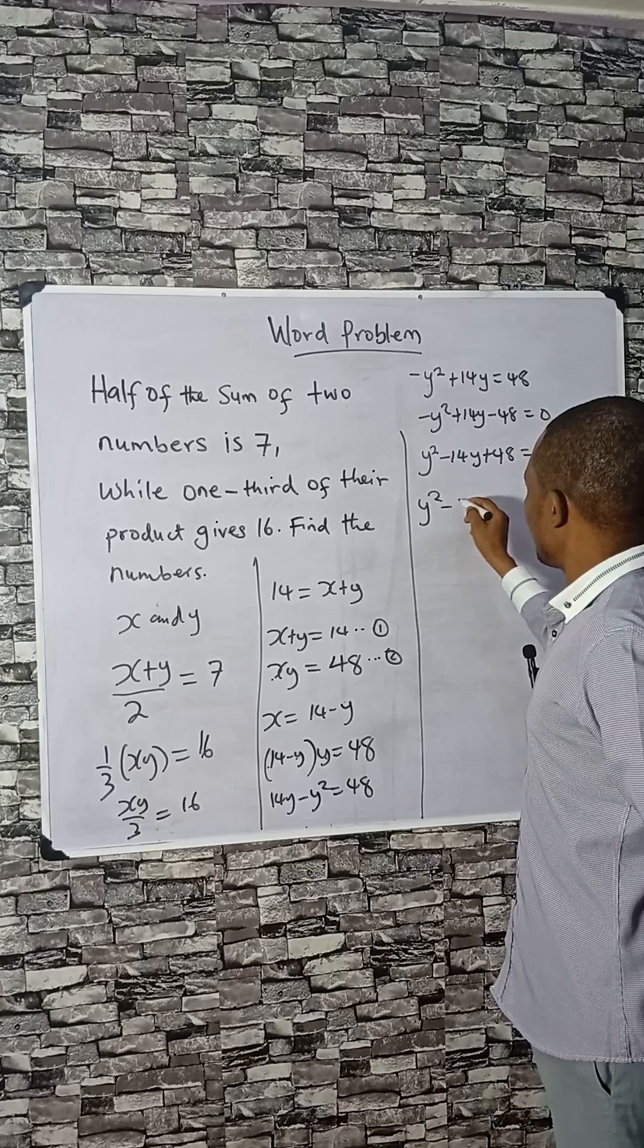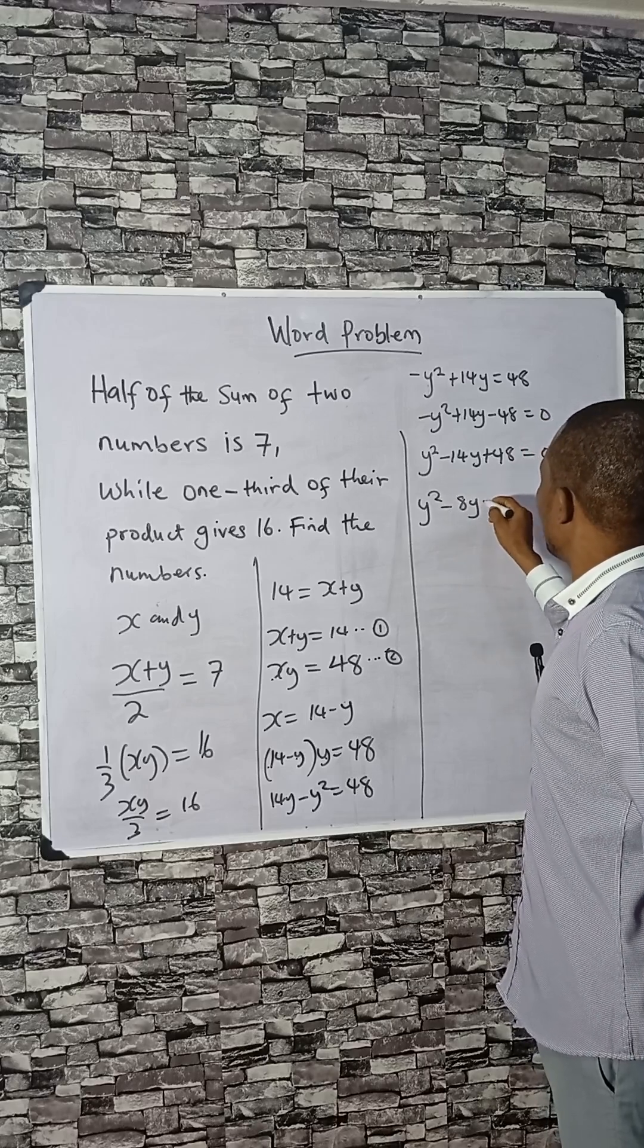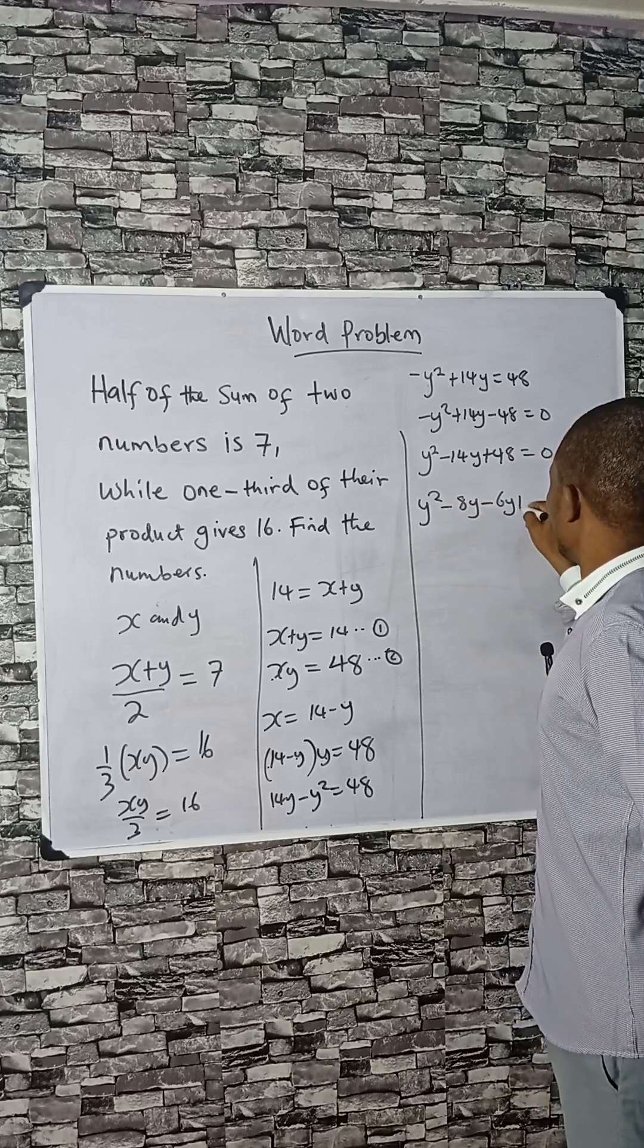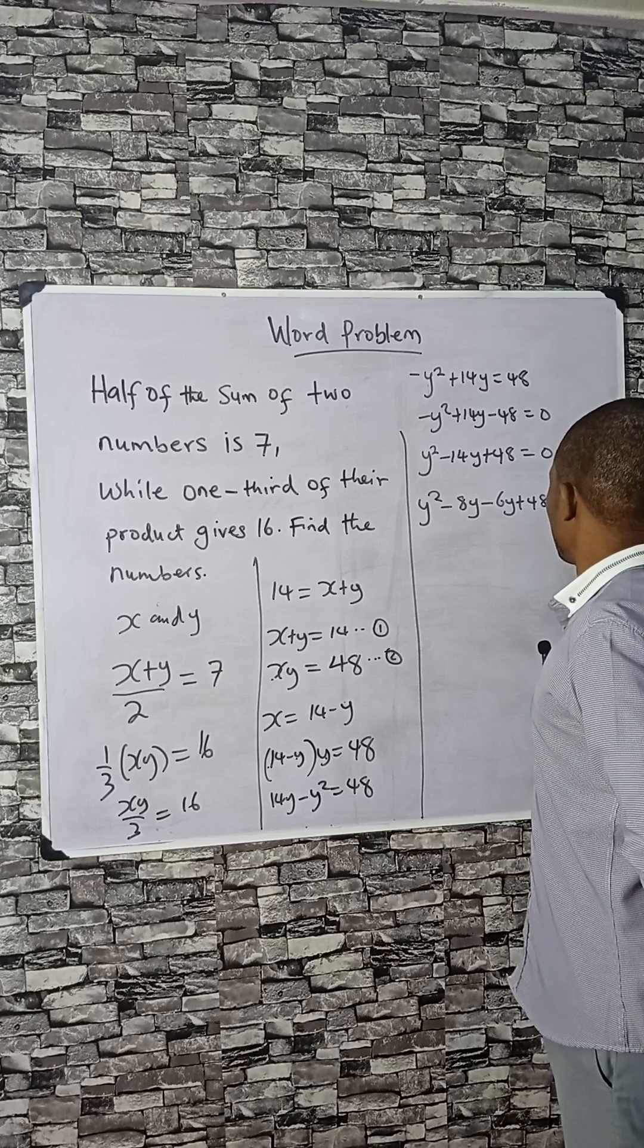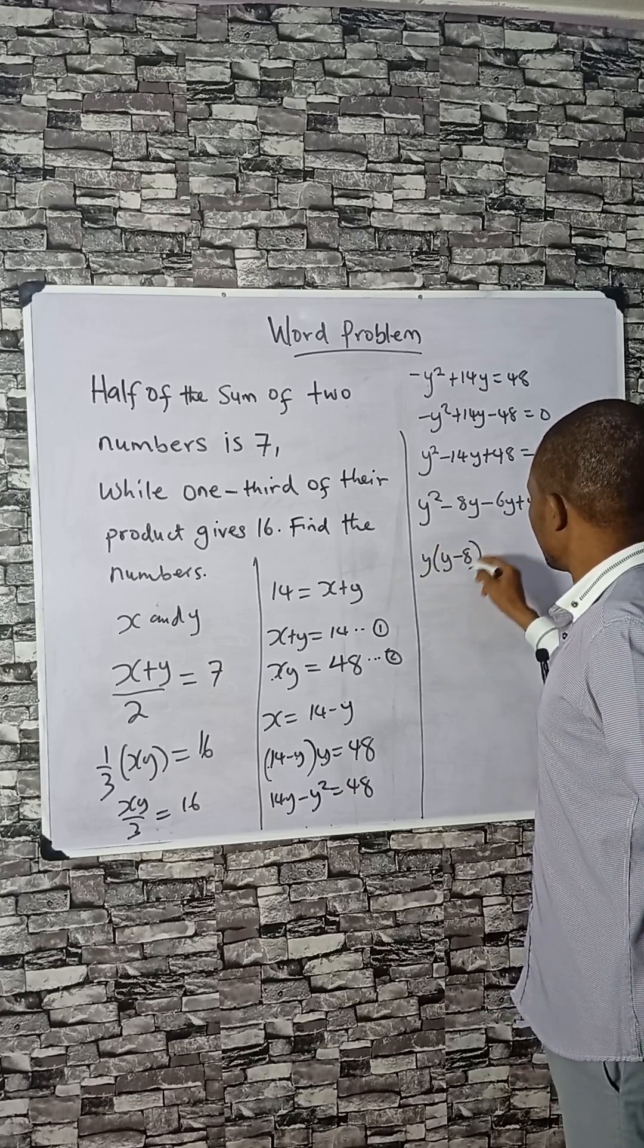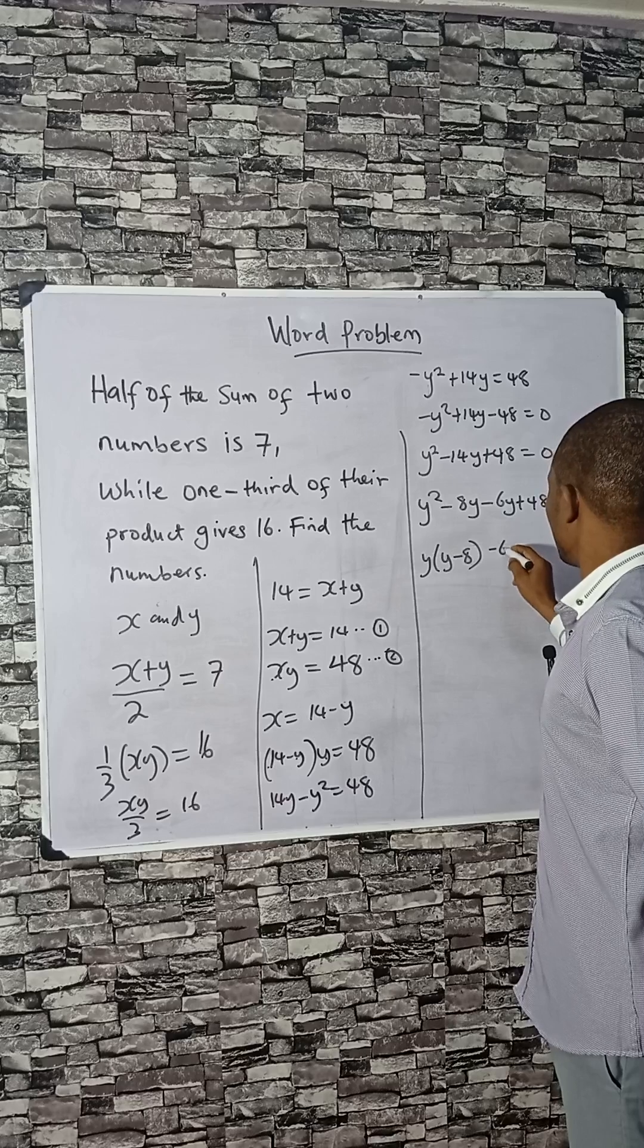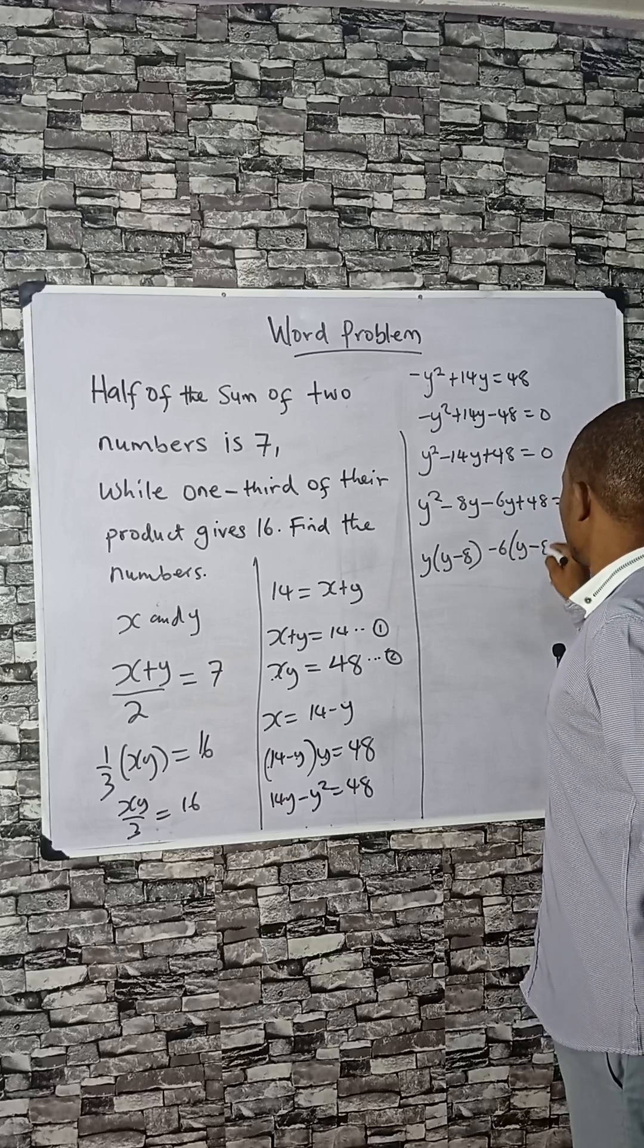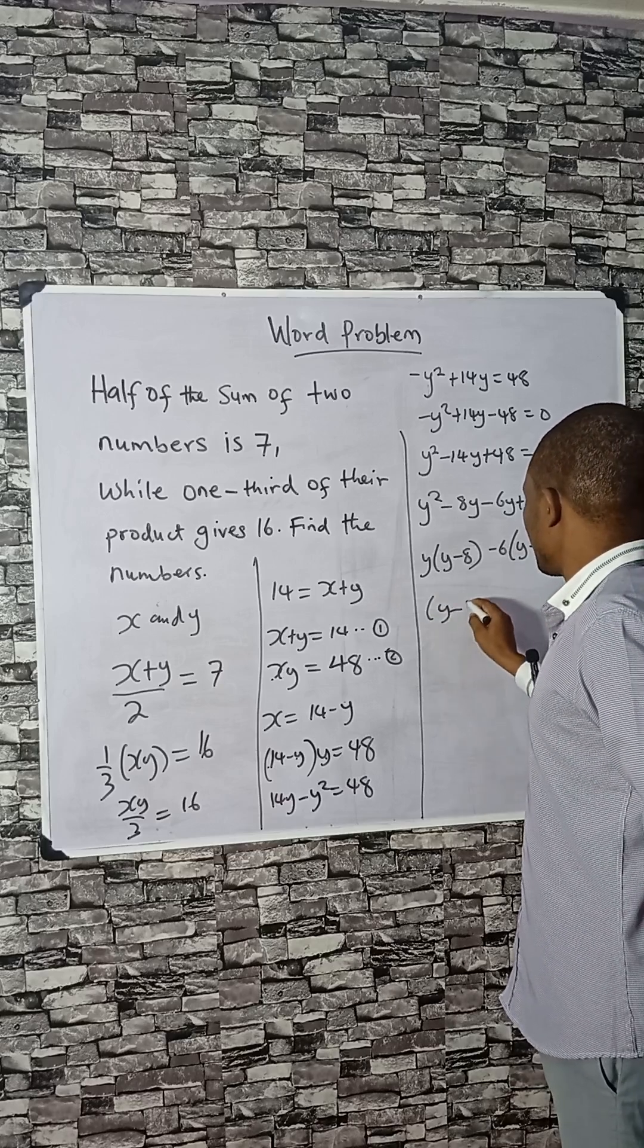So y squared minus 8y minus 6y plus 48 equals 0. By grouping, y into minus 8 here, minus 6 is common. Y minus 8 here equals 0.